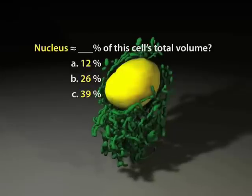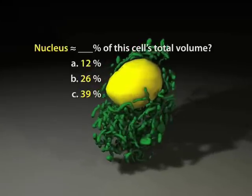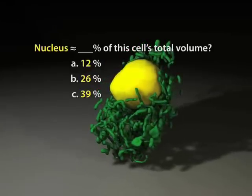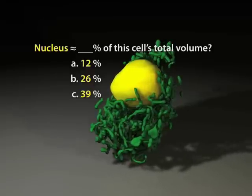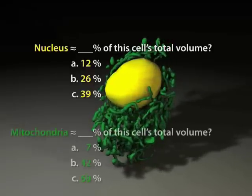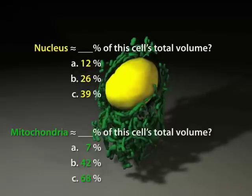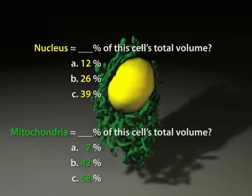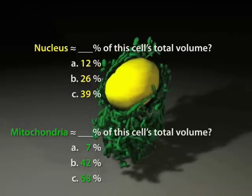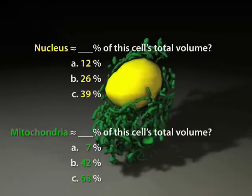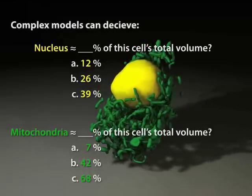For example, approximately how much of the cell's total volume do you think that this yellow nucleus occupies? About 12%, 26%, or about 39%. How much of the cell's total volume do you think that the green mitochondria occupy? About 7%, 42%, or about 68%? Believe it or not,